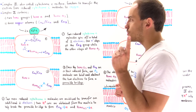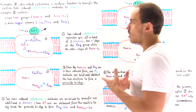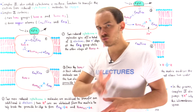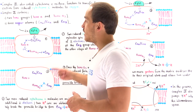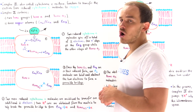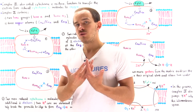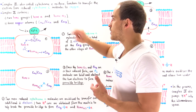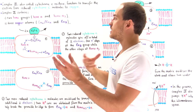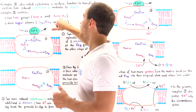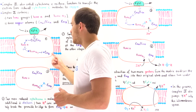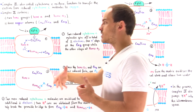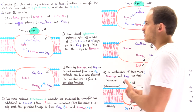Complex 4 contains two important groups: the heme groups and copper atoms. There are two heme groups — heme A and heme A3 — and three copper atoms. Two of the copper atoms associate with one another to form the copper A copper A center. The third copper atom, called copper B, associates with heme A3 to form the heme A3-copper B center, where oxygen is reduced to form water molecules.